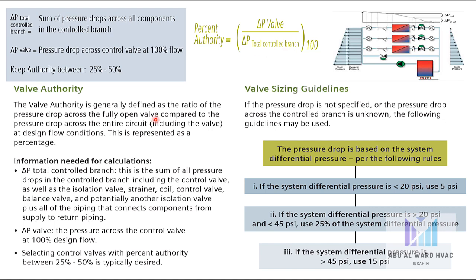The information needed for calculation is ΔP total controlled branch and ΔP valve. We should select a control valve with percent authority between 25% and 50%, which is the desired range. For valve sizing guidelines: use ΔP for valve of 5 PSI if system differential pressure is less than 20 PSI; use 25% of system differential pressure if greater than 20 PSI; and use 15 PSI if the system differential pressure is greater than 45 PSI.